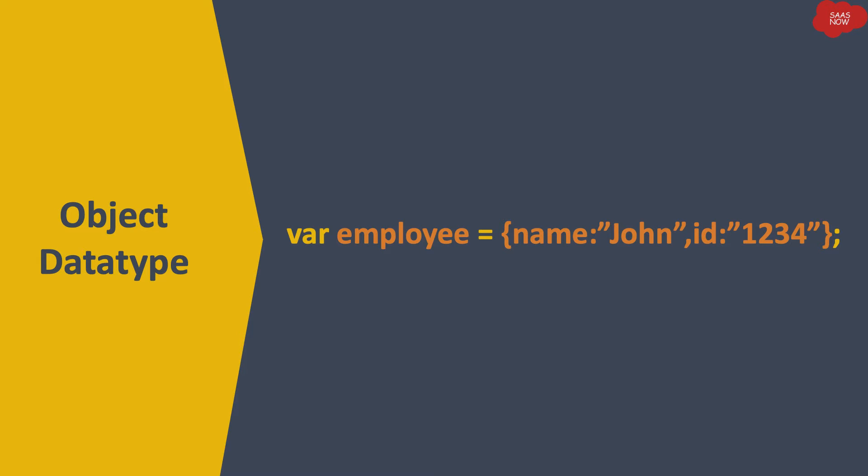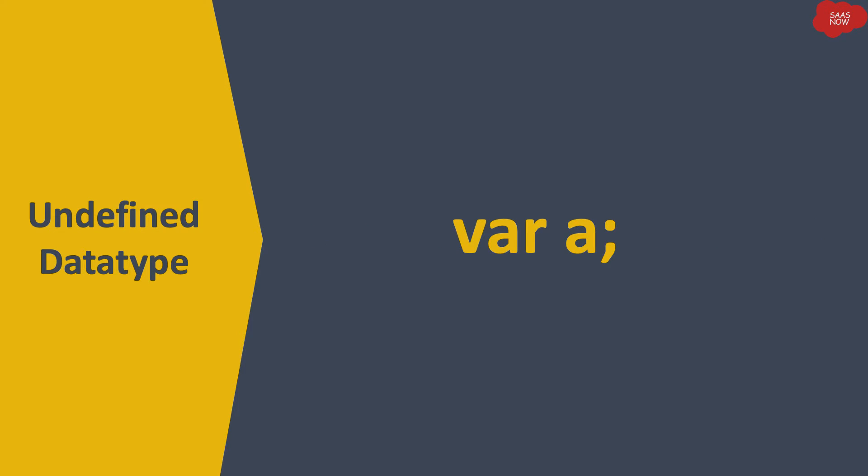JavaScript also has the undefined data type, where if you don't define any value for a variable, that variable becomes undefined. If you want to define it, you write 'var a = someValue'. But if you just write 'var a;' and end the line, that variable becomes undefined — meaning no value has been assigned to that particular variable.